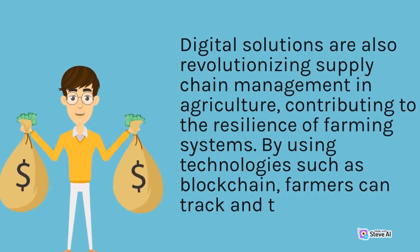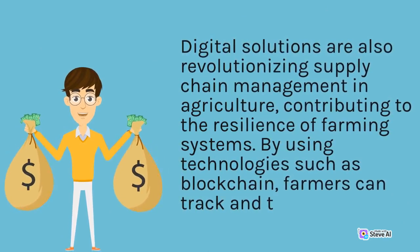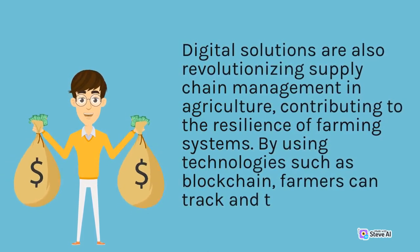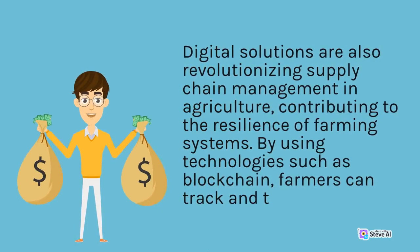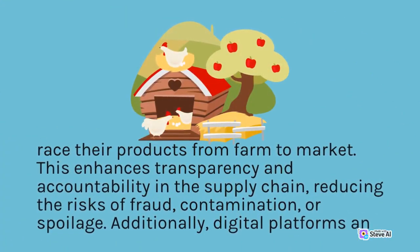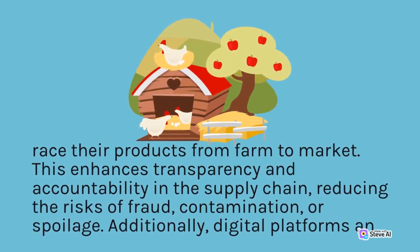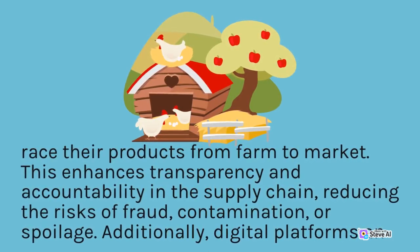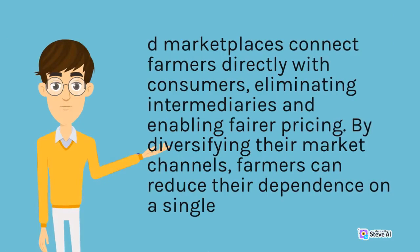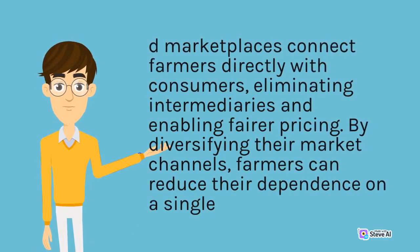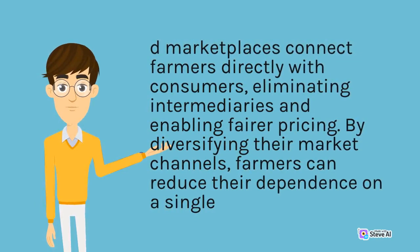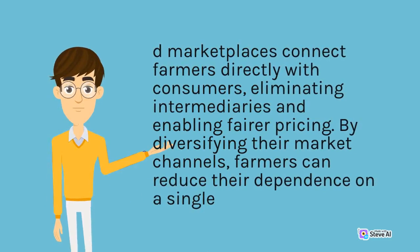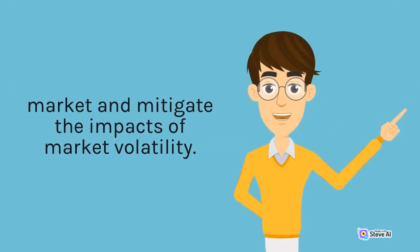Digital solutions are also revolutionizing supply chain management in agriculture, contributing to the resilience of farming systems. By using technologies such as blockchain, farmers can track and trace their products from farm to market. This enhances transparency and accountability in the supply chain, reducing the risks of fraud, contamination, or spoilage. Additionally, digital platforms and marketplaces connect farmers directly with consumers, eliminating intermediaries and enabling fairer pricing. By diversifying their market channels, farmers can reduce their dependence on a single market and mitigate the impacts of market volatility.